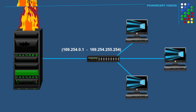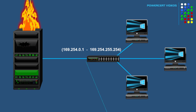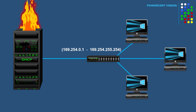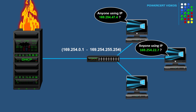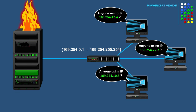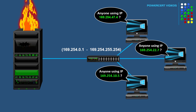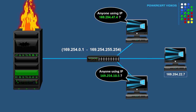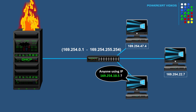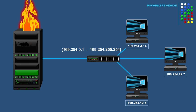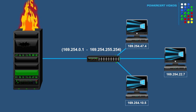To ensure that computers don't pick the same IP address, each computer will broadcast an ARP message on the network to make sure no other computer has already taken that address. Once they all have their IP addresses, they will be able to communicate with each other on the same subnet.